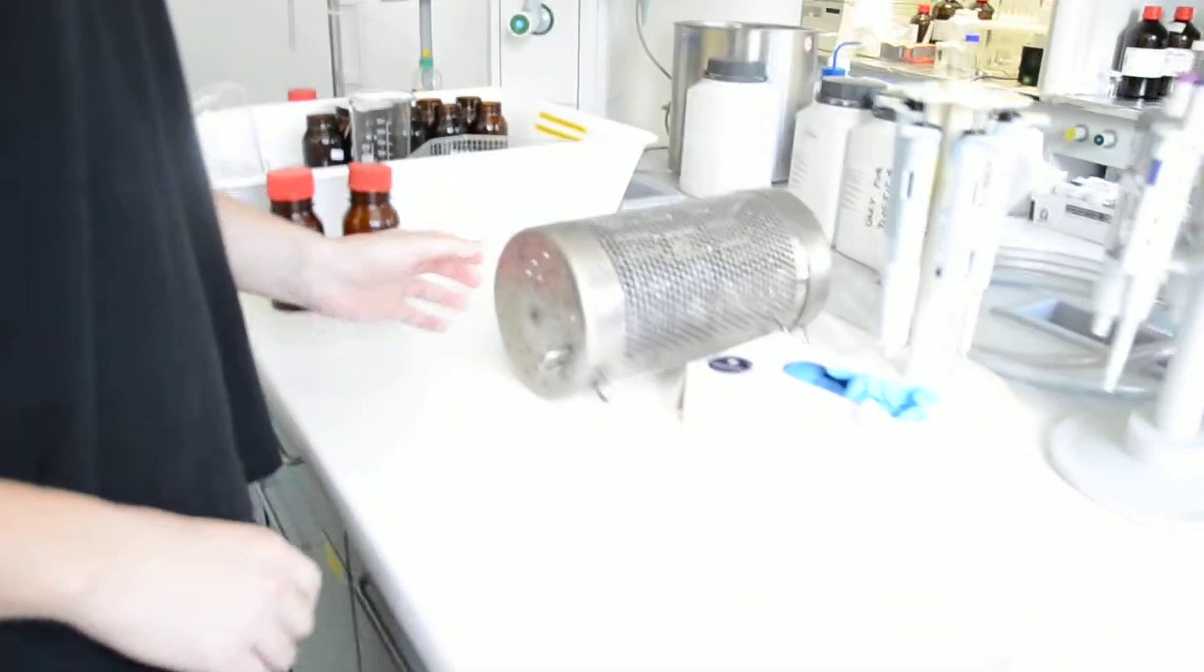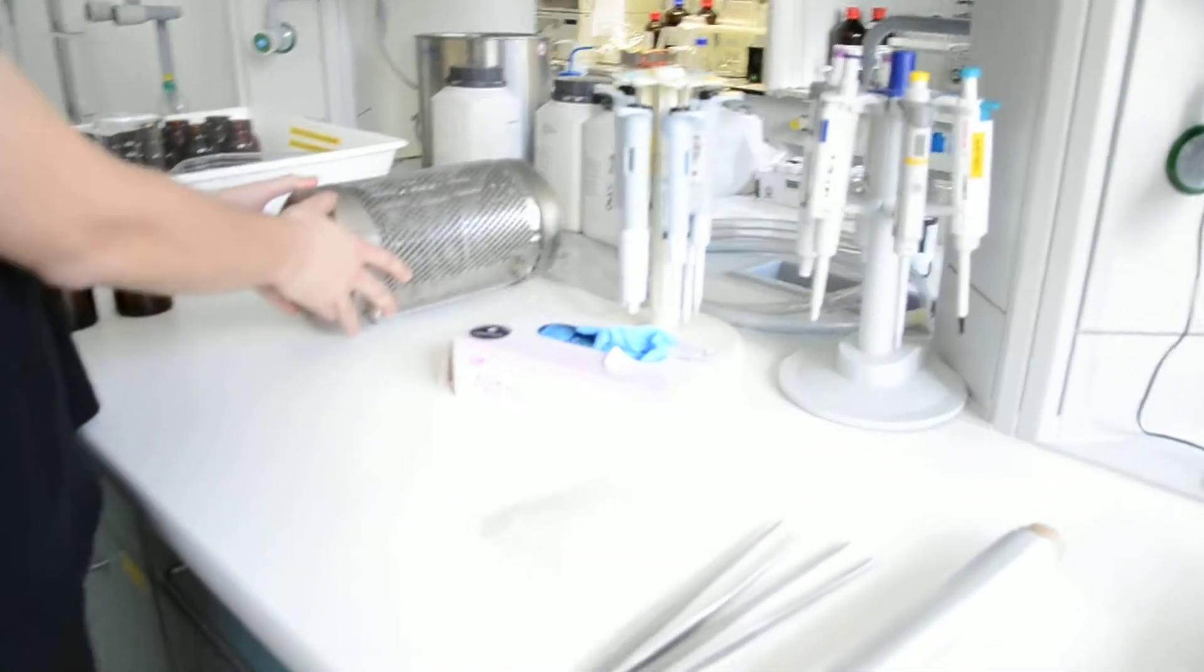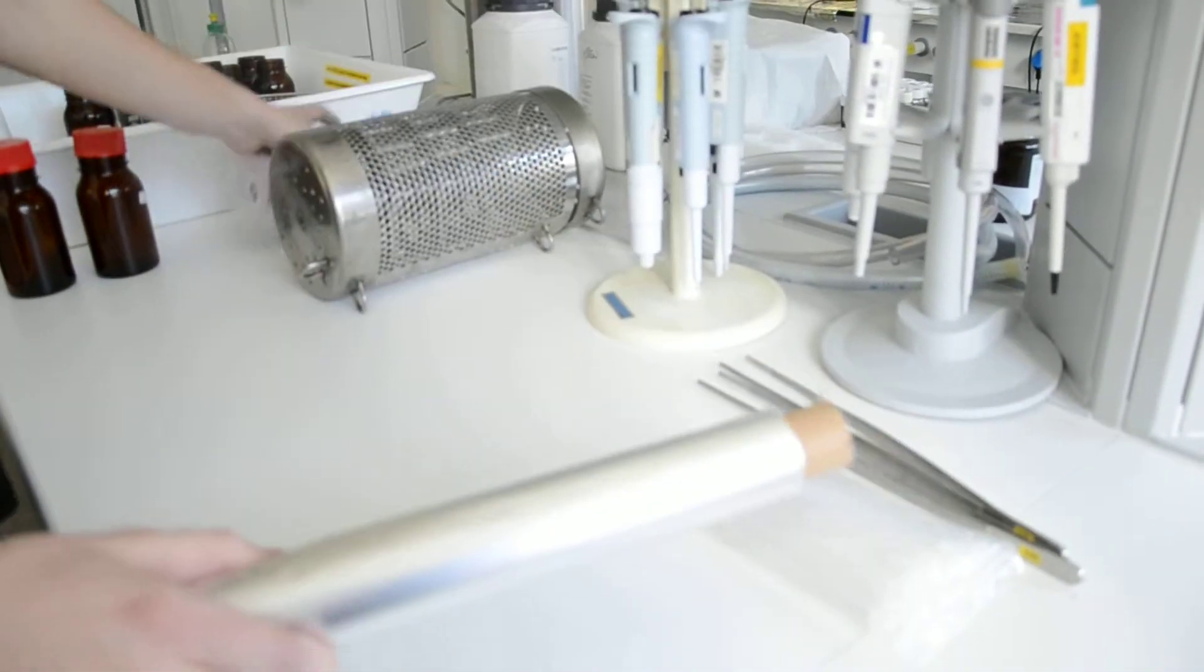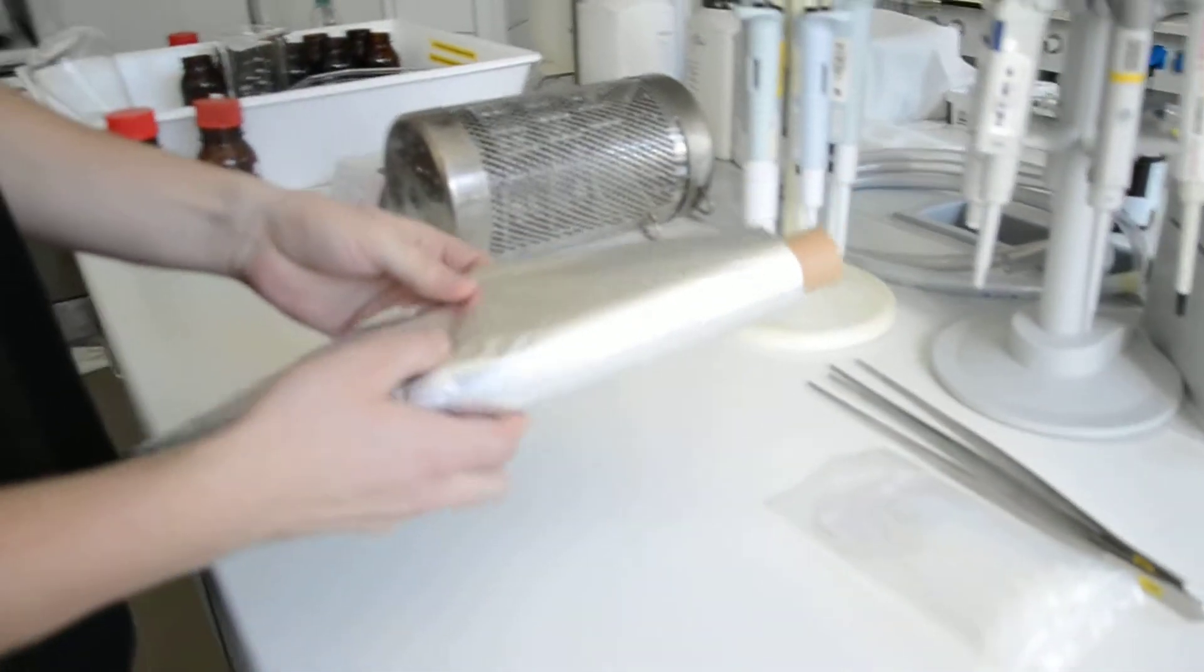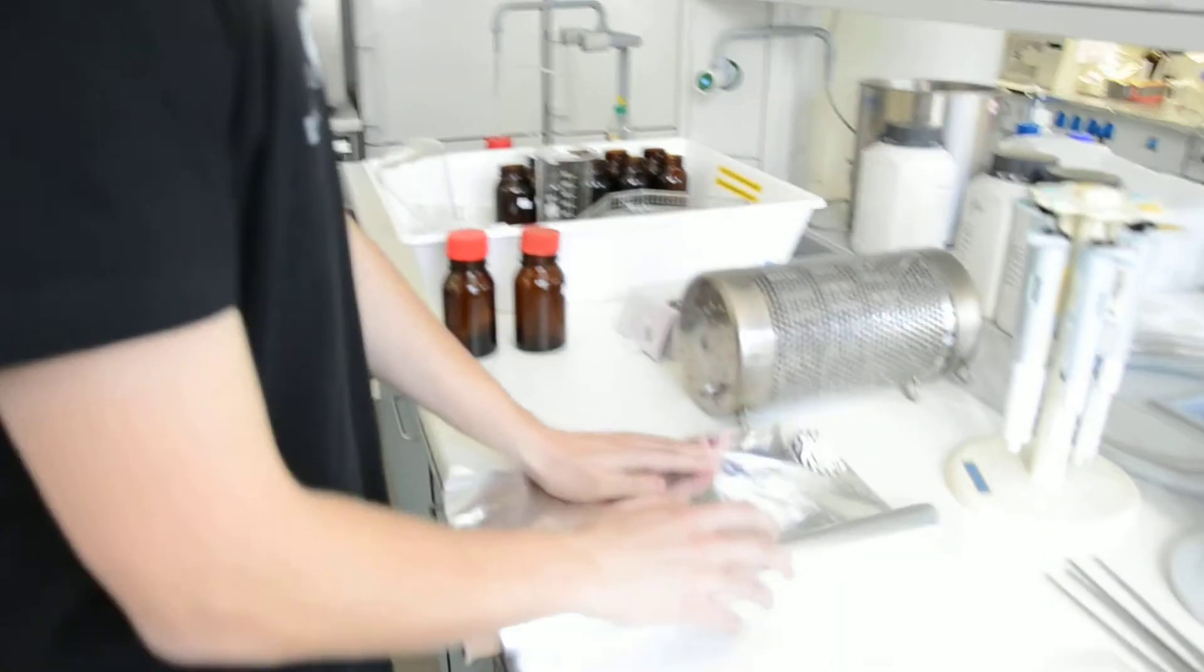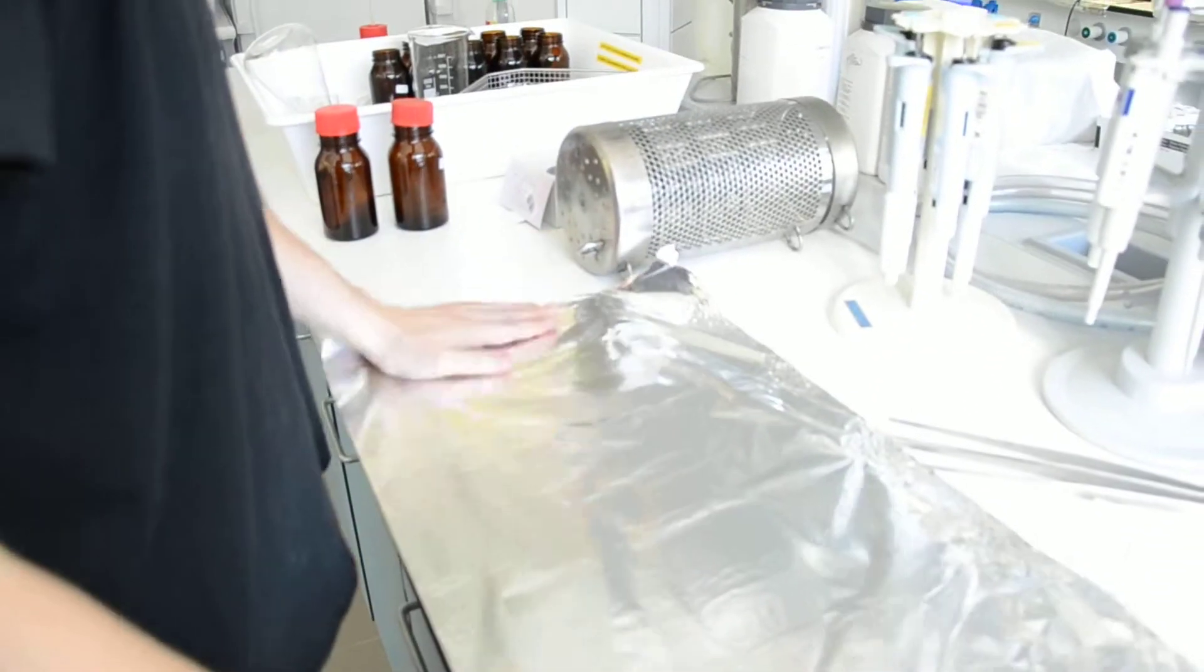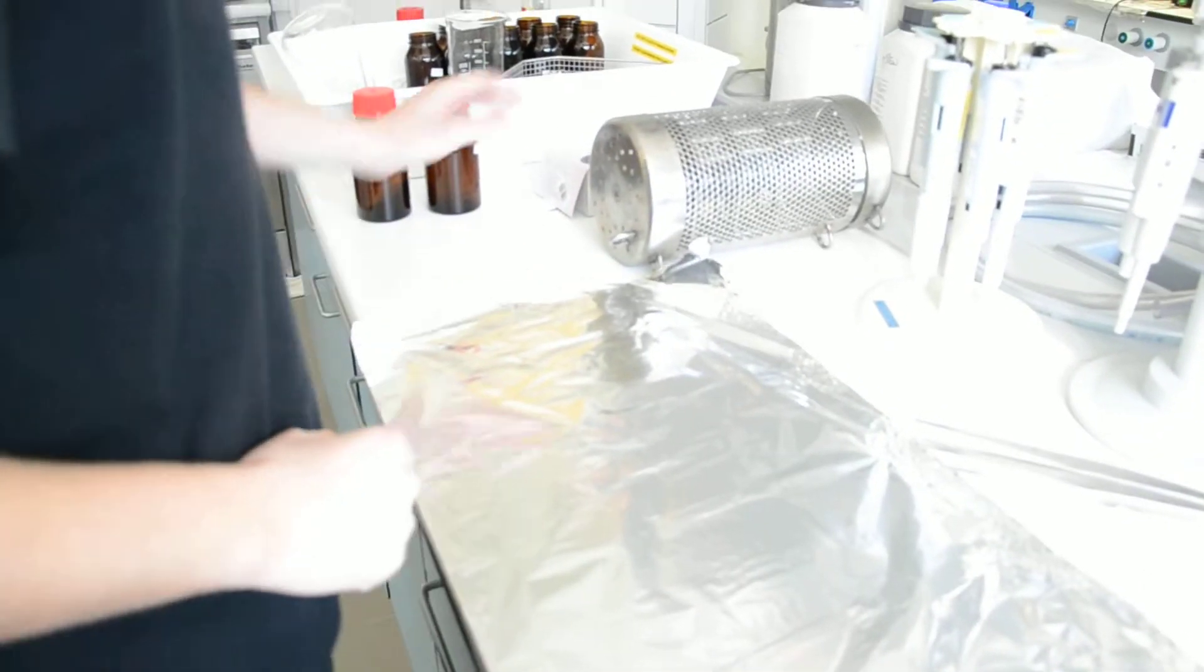First, we will start by preparing a clean surface. We take the aluminum foil, we can make surface like this and we open the cage. It turns like this.